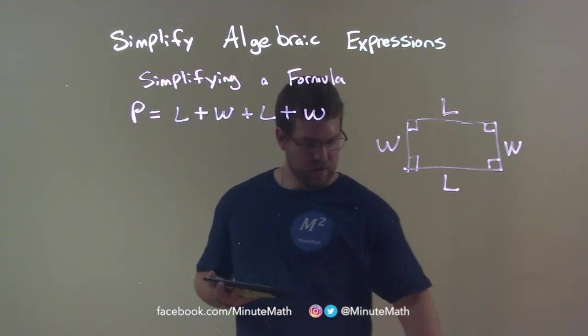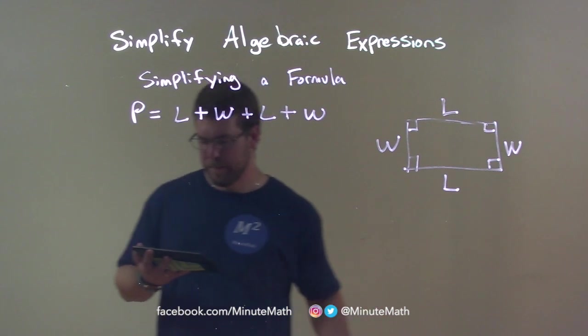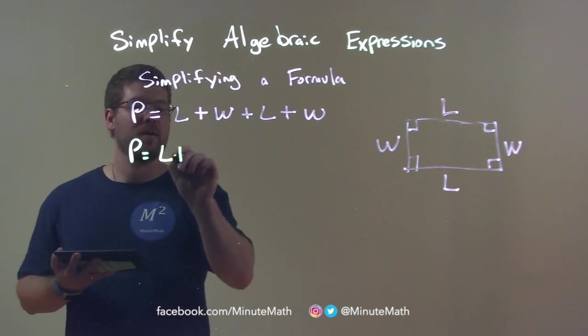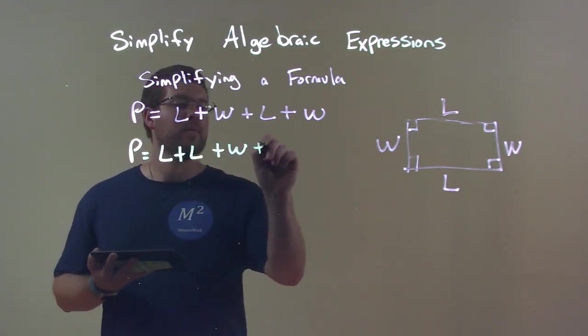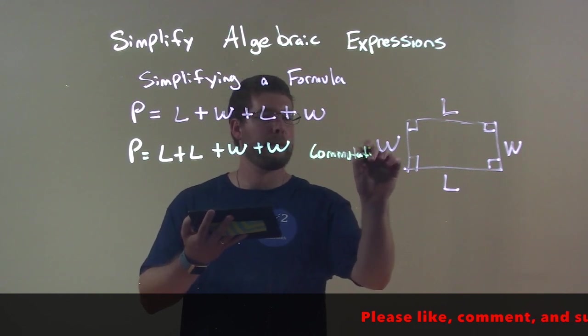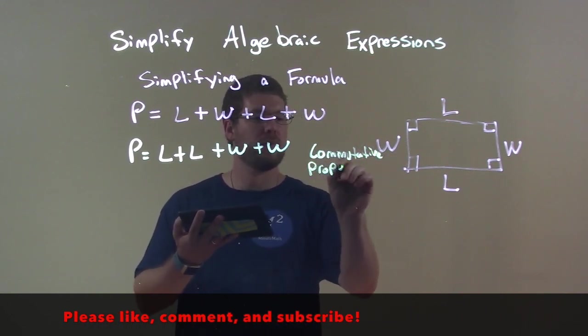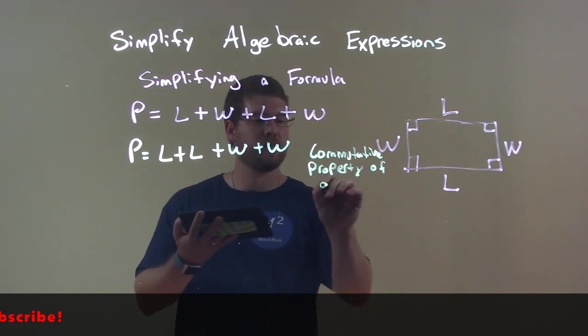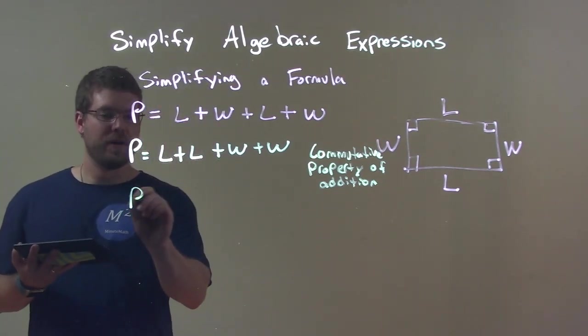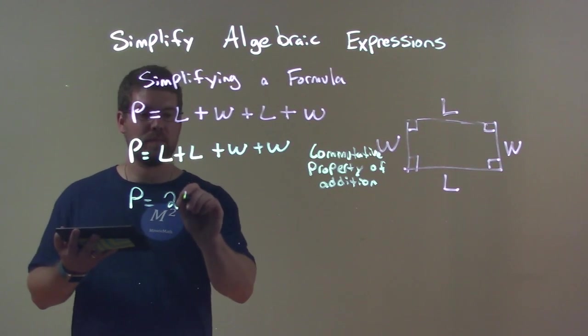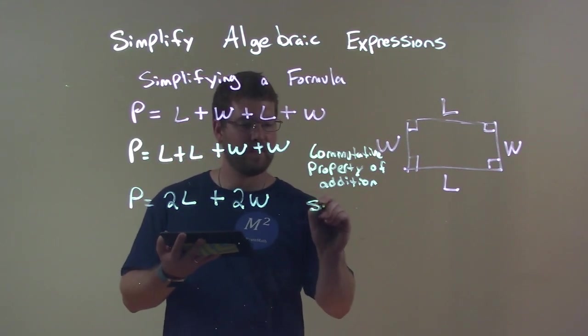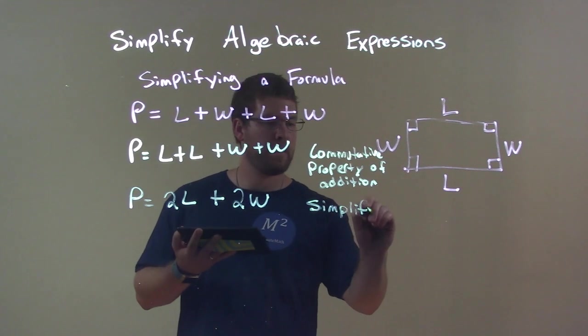Okay? So now, let's go simplify this. Okay? So first, what I'm going to do is put my like terms together. L's first. So L plus L plus W plus W. And that property was the commutative property of addition. Okay? Now we're going to combine our like terms and simplify. So L plus L is 2L. And W plus W is 2W. That's, we're simplifying there. Simplify.